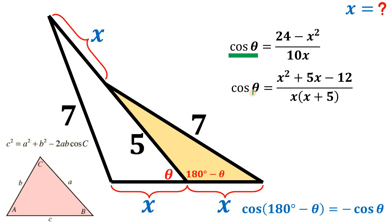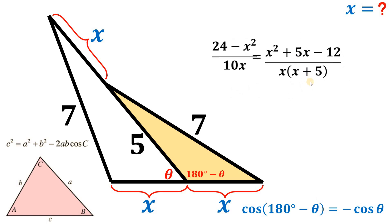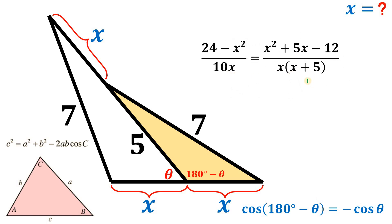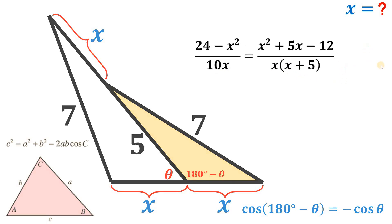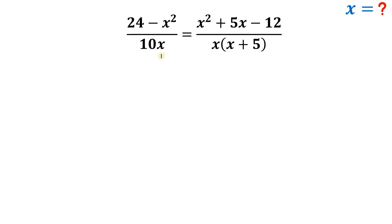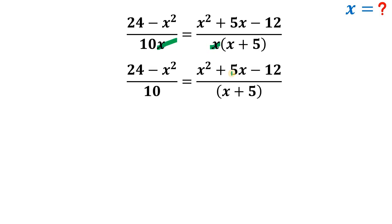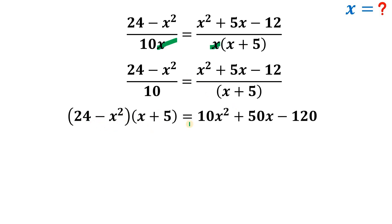Since both expressions equal cos(theta), we set them equal: (x² + 5x − 12) / [x(x + 5)] = (24 − x²) / (10x). Multiplying both sides by x eliminates the x in the denominator, then cross-multiplying gives: (24 − x²)(x + 5) = 10(x² + 5x − 12).